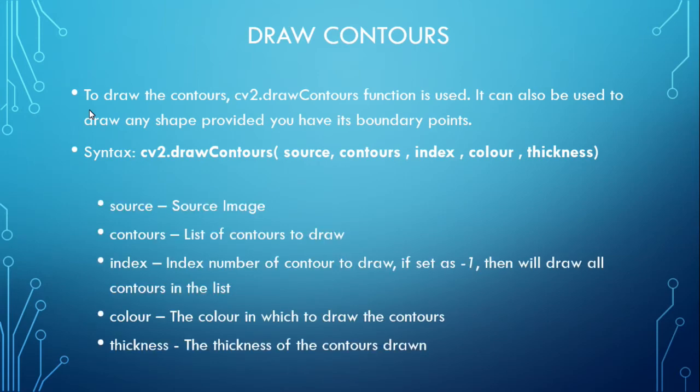In the drawContours function, source_image is the source image, contours is the list of contours to draw, index is the index number — if set to -1 then all contours in the image will be drawn, colour is the BGR colour value used to draw the contours, and thickness controls the thickness of the contour line.